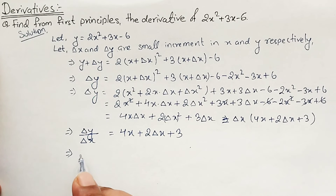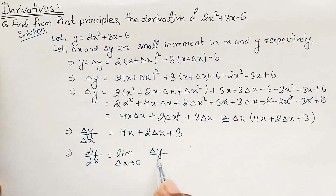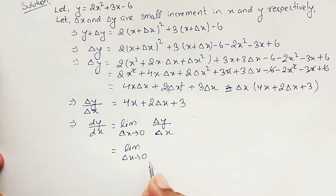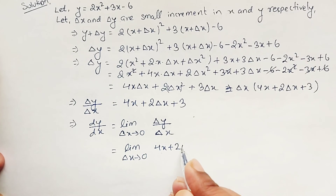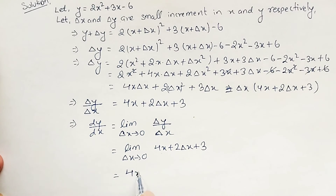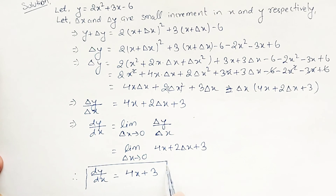By the first principle, dy/dx equals the limit as Delta X tends to 0 of Delta Y over Delta X. Since Delta Y / Delta X equals 4x plus 2·Delta X plus 3, applying the limit makes the Delta X term go to 0. Therefore, dy/dx equals 4x plus 3. This is our final answer.